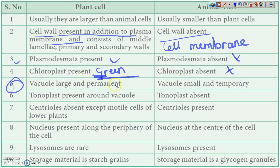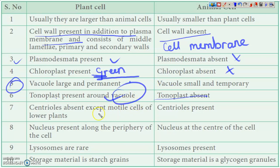Now we will see with respect to vacuoles. In animal cells, vacuoles are either absent, or if present they are small in size and scattered. In plant cells, vacuoles are well developed and usually a single large central vacuole is present. Tonoplast is absent in animal cells, while in plant cells tonoplast is present around the vacuole.